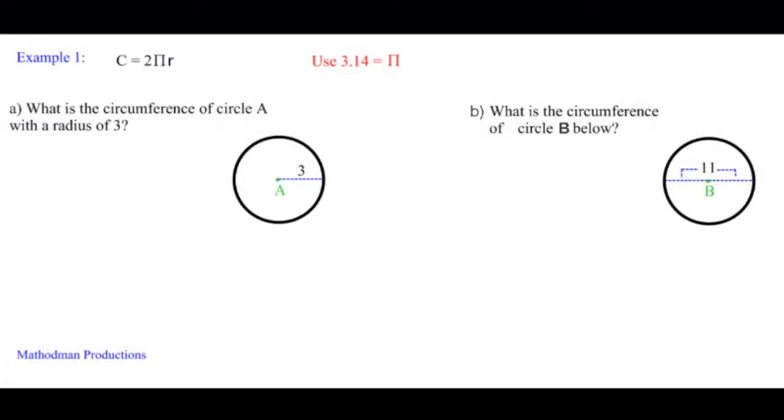Let's use that formula for the examples below. What is the circumference of a circle A with a radius of 3? All you have to do is substitute everything you know and then calculate. So, C we don't know equals 2. We're going to use 3.14 for pi and we're given the radius as 3. I just substituted everything I know. Now simplify. 2 times 3.14 times 3 is just 18.84, which is my circumference.